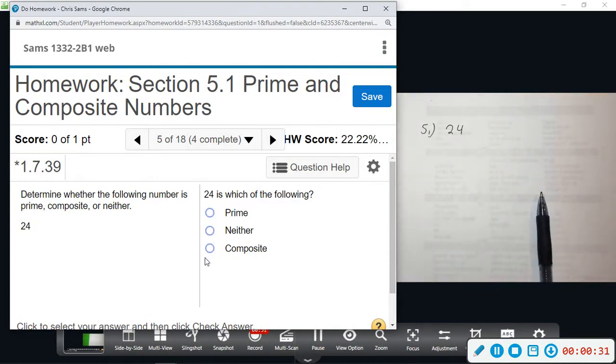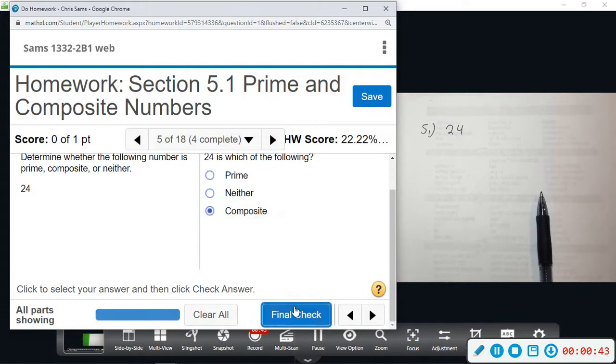So every number is going to be prime or composite. The only one that's not in either group is going to be the number one. Okay, so this one is a composite number. This means it's not prime.